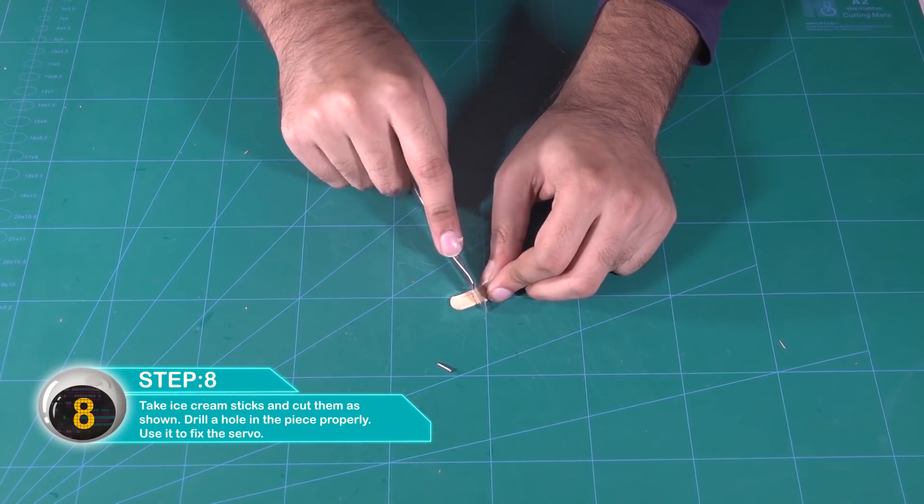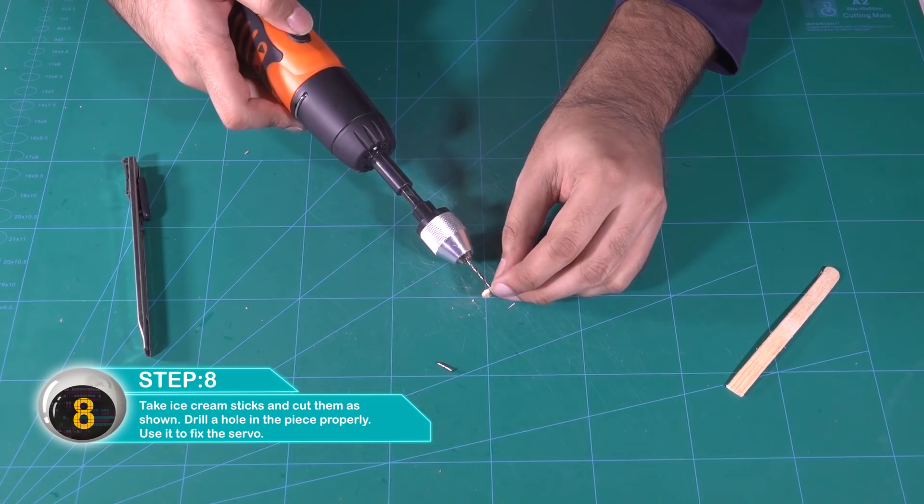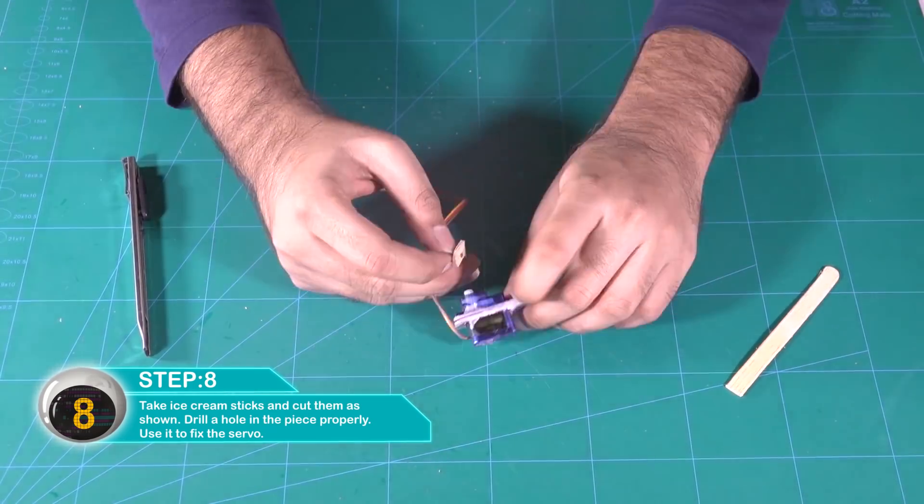Take ice cream sticks and cut them as shown. Drill a hole in the piece properly. Use it to fix the servo.